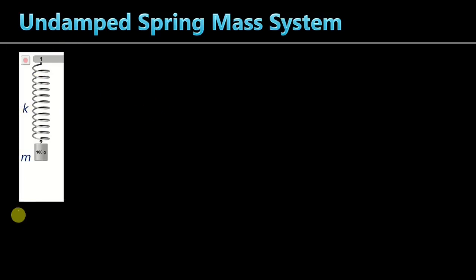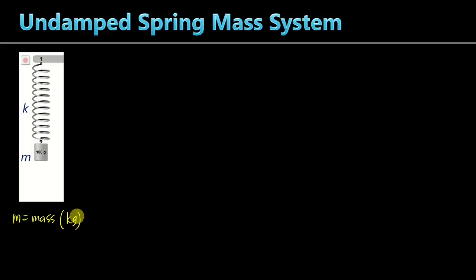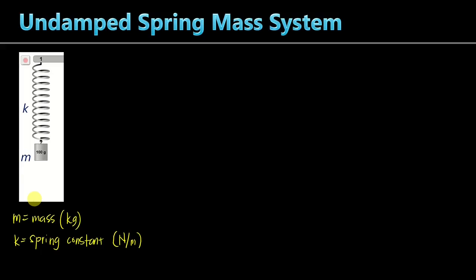The stiffness of the spring is measured by a constant called the spring constant, represented by K, measured in newtons per meter. When using SI units, mass must be expressed in kilograms. When the value of K is large, the spring is stiff. When the value of K is small, the spring is soft. Initially, this mass is in its equilibrium position, and we represent X as the position of the mass at any given time, so at the equilibrium position, X equals zero.